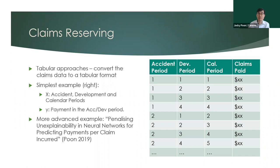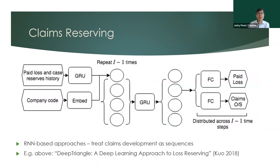Two main categories of neural network models are being tested for reserving. One is tabular-format neural networks — framing it similarly to the technical pricing problem — where you have accident period, development period, and calendar period as features and try to predict claims payments, then project out the bottom half of your triangle. The other is modeling things as time series. A time series approach includes architectures based on RNNs and GRUs.